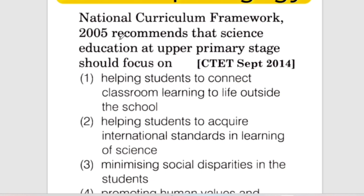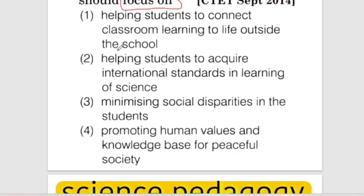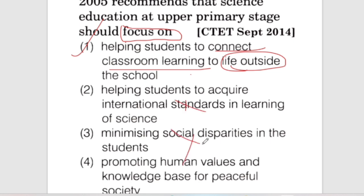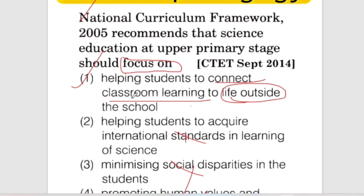The National Curriculum Framework 2005 recommends that science education at the upper primary level should focus on helping students connect classroom learning to life outside. If you are interested in science — practical scouts, project scouts, etc. — the first option is to help students connect classroom learning to life outside school.